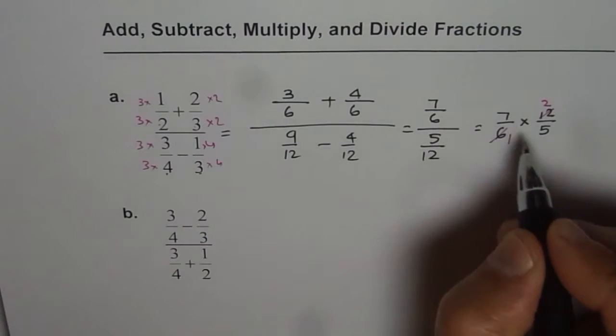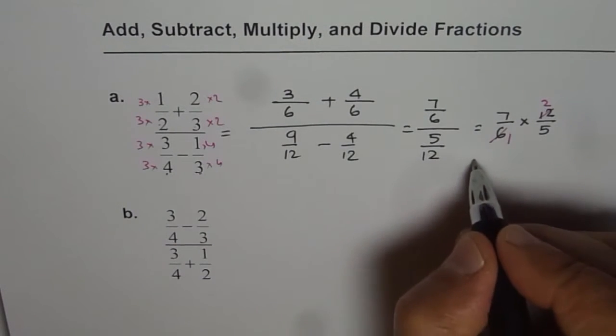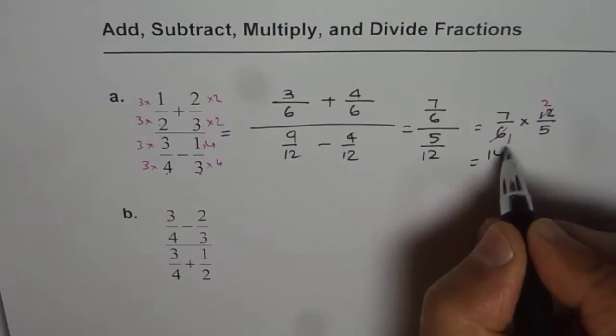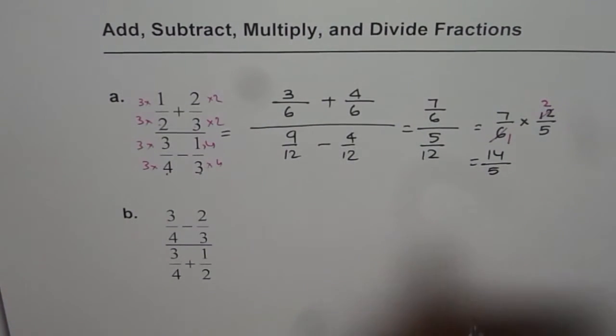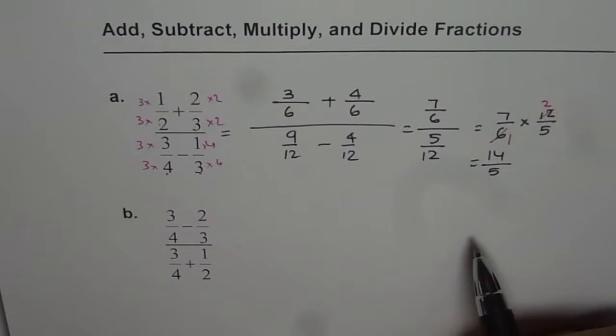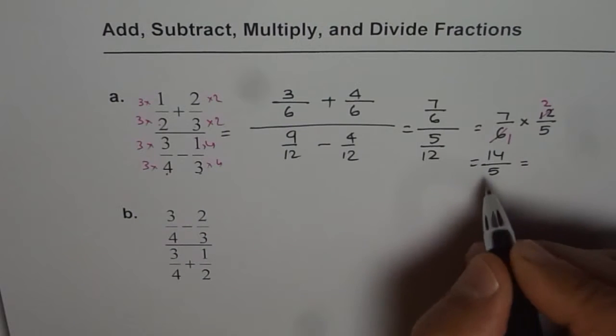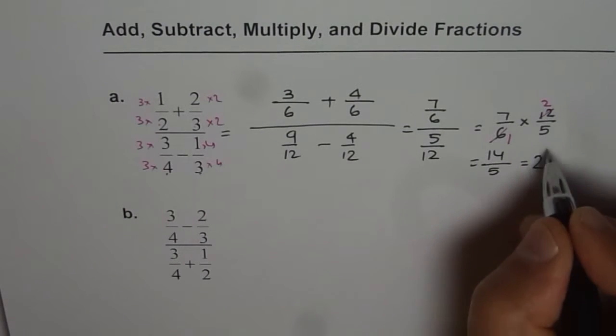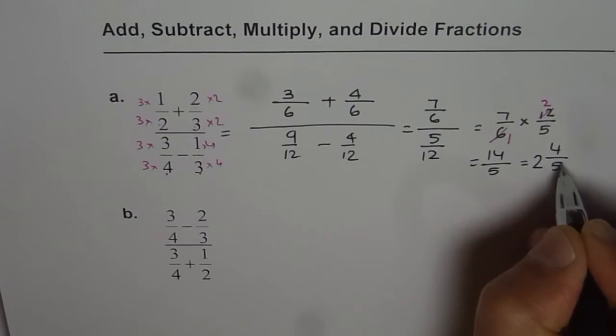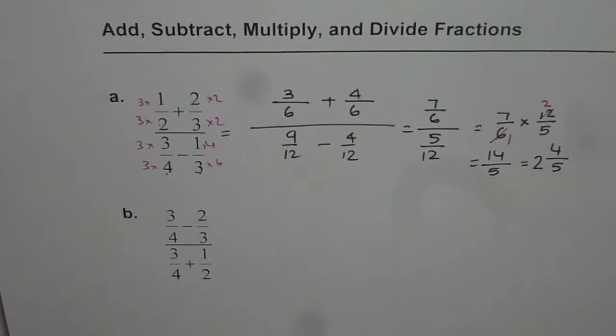7 times 2 equals 14 and 5 times 1 is 5. Since the result is improper fraction, we should convert it to mixed number. So 5 times 2 is 10, remainder is 4. We get 2 and 4 over 5.